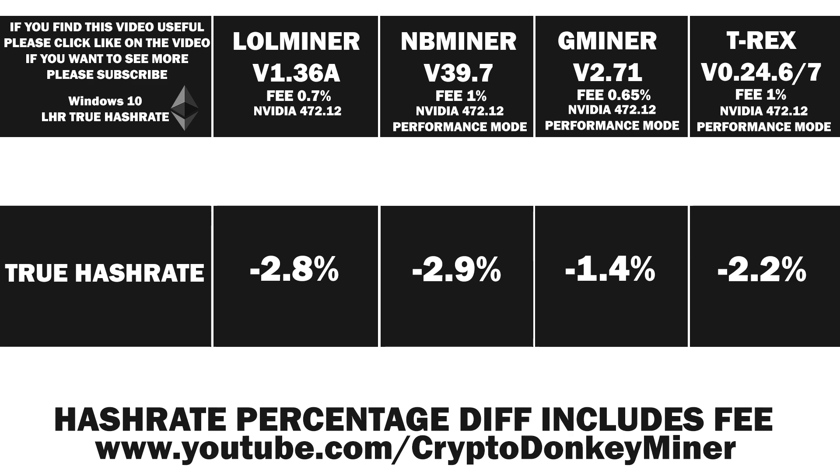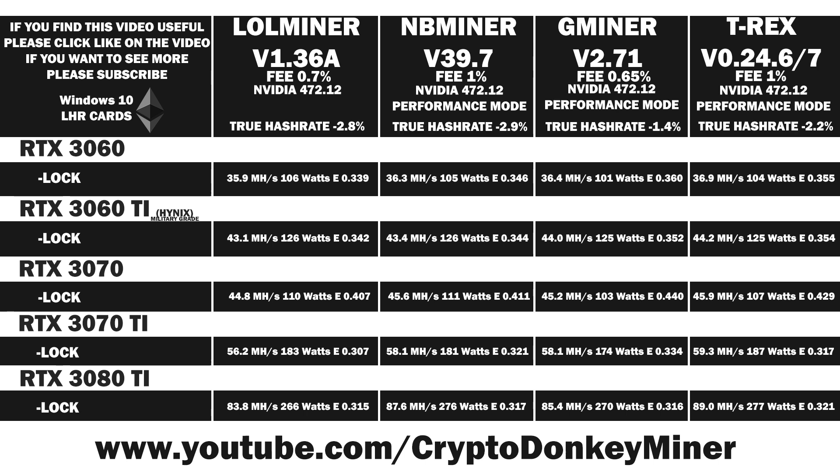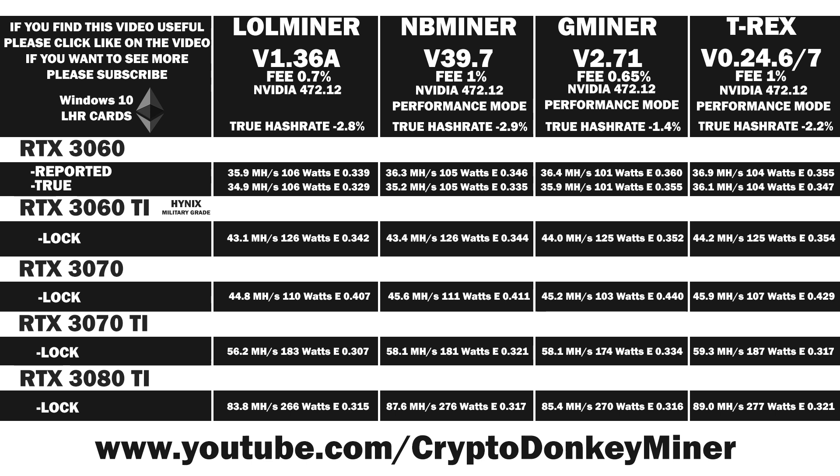Now let's have a look at the previous results. The videos for these results can all be found on my channel. First, we will add the true hash rate percentage to the very top, and then we will start looking at the different cards. First up is the RTX 3060. Here you can see the reported hash rate versus the true hash rate, where we have applied the true hash rate modifier. The two best are still G Miner and T-Rex, depending on if you prefer efficiency over hash rate.